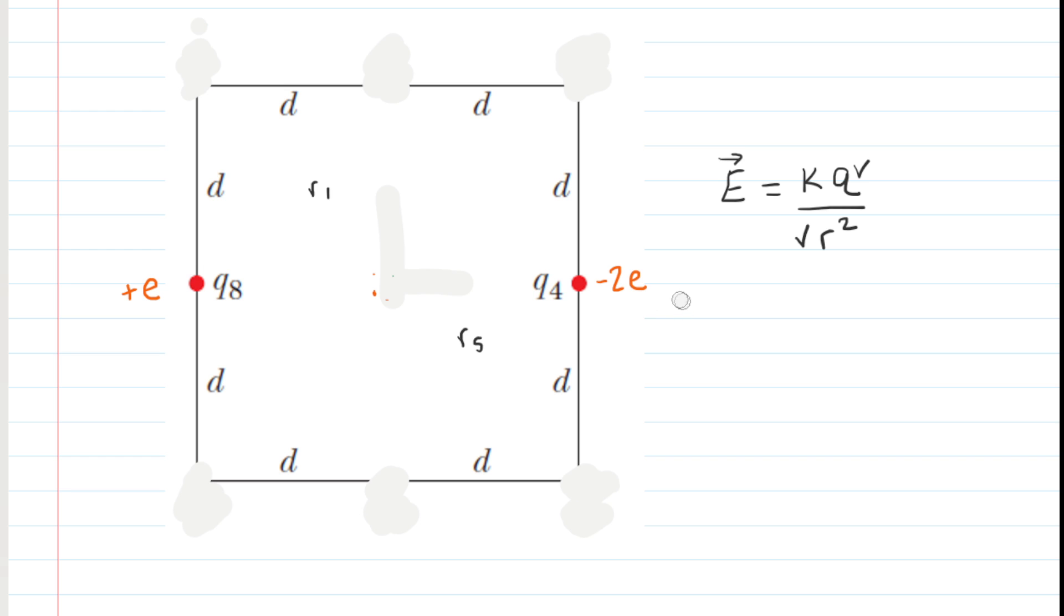So really all we are left with is the two charges here. Now we are still at the center. That's where we're trying to calculate the electric field. We look at Q4, which is negatively charged. So if we put a positive test charge at the center, then Q4 would draw that charge towards itself. It would attract it. So the electric field produced by Q4 points to the right.